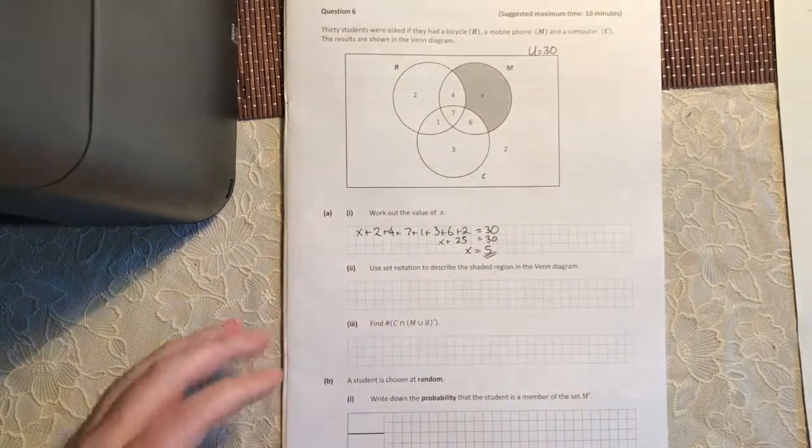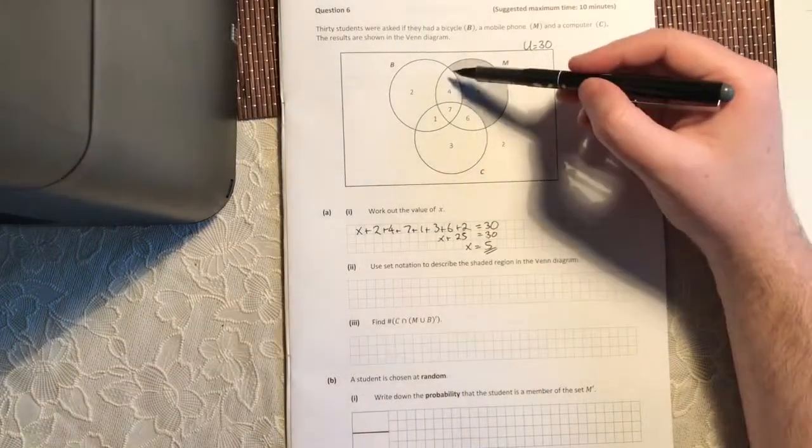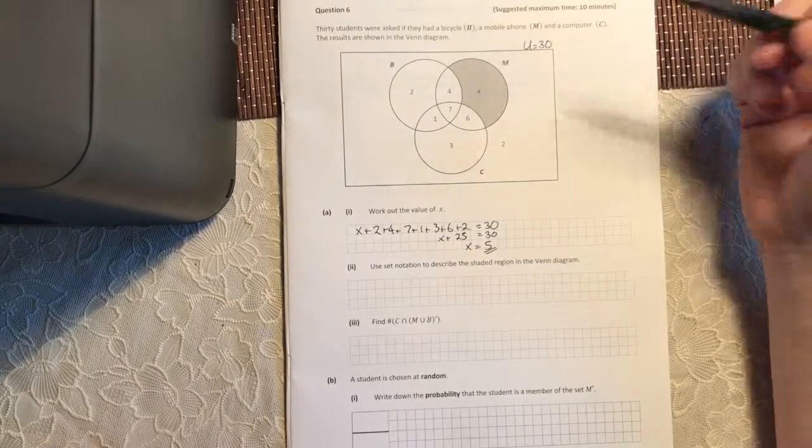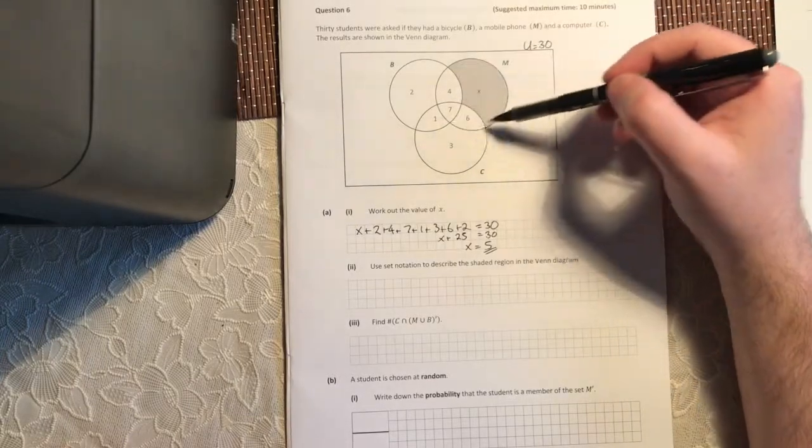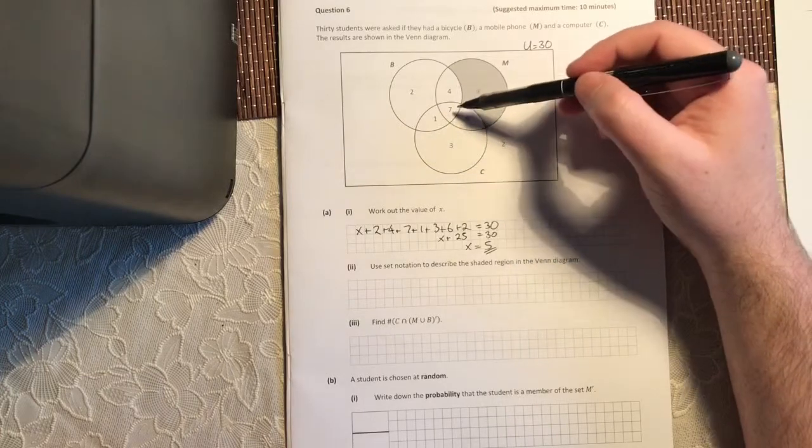Use set notation to describe the shaded region in the Venn diagram. Alright, so the shaded region is shaded for us. That's handy. And it's in the circle of M, but B has been cut out of it and C has been cut out of it.